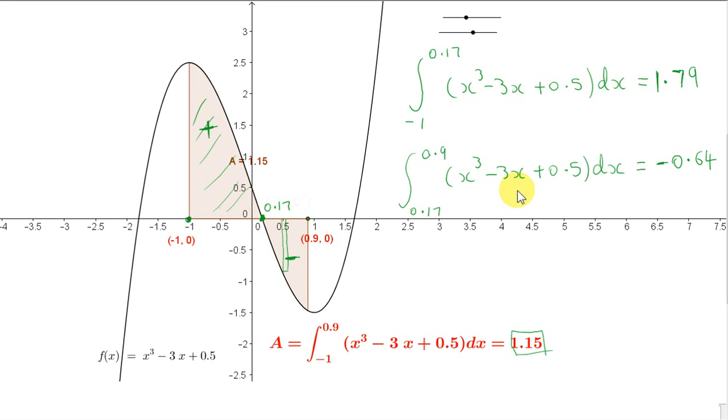So f of x is negative for all values of x in this region here. The graph is below the x-axis. So we're summing all those rectangles. Some of them are negative, and of course, they will tend to cancel out the positive ones.